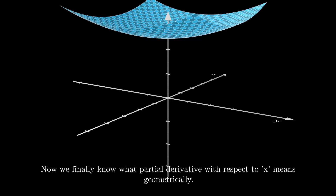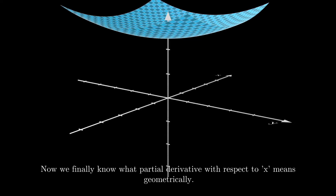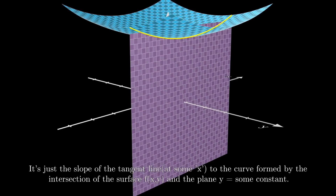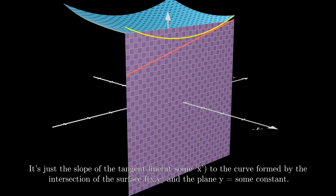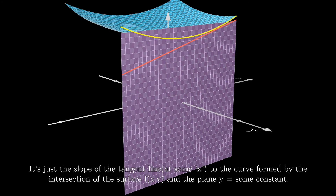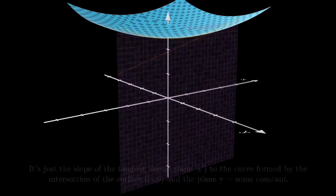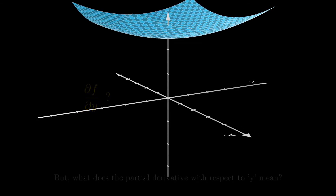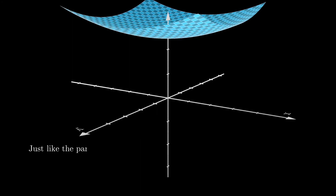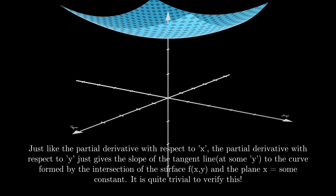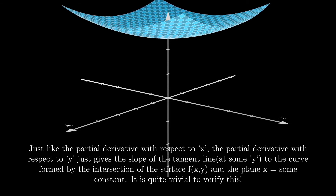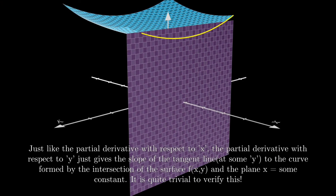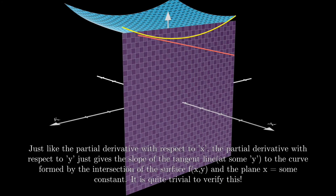We finally know what the partial derivative with respect to x means geometrically — it's the slope of the tangent line to the curve formed by the intersection of the surface f(x, y) and the plane y equals some constant. Similarly, the partial derivative with respect to y gives the slope of the tangent line to the curve formed by the intersection of the surface f(x, y) and the plane x equals some constant.